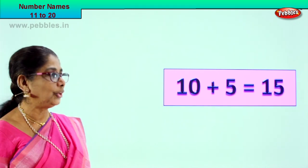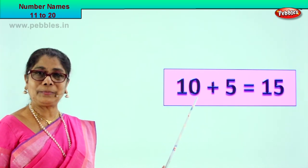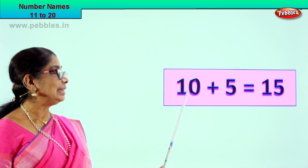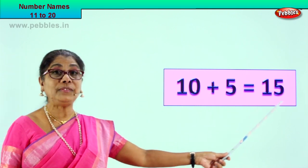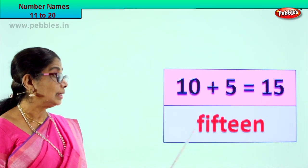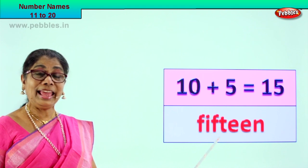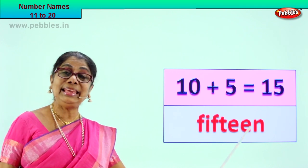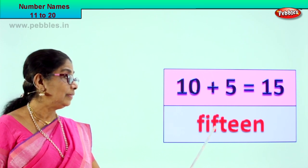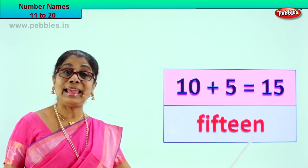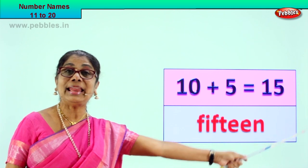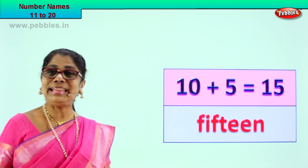Shall we take the next exercise? Good! Here we are. 10 plus 5 is equal to 15. Say it again — 10 plus 5 is equal to 15. Now we must learn to write 15 in words — F, I, F, T, E, E, N. 15 in words. The spelling again: F, I, F, T, E, E, N. 15. 10 plus 5 is equal to 15, and in words we learn to write 15. Good!